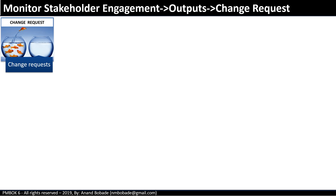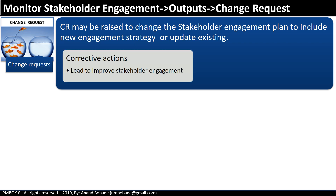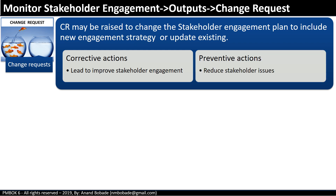Change requests may be raised to change the stakeholder engagement plan to include new engagement strategies or update existing ones. Change requests may include corrective actions to improve stakeholder engagement or preventive actions to reduce stakeholder issues. Any change requests made as a result are processed through the Perform Integrated Change Control process.